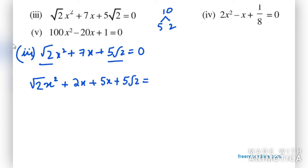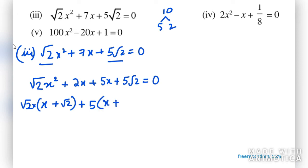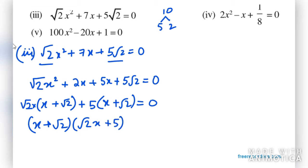So we write √2·x² + 2x + 5x + 5√2 = 0. From the first two terms, take x common: x(√2·x + 2). From the last two terms, take 5 common: 5(x + √2). This gives factors (x + √2) and (√2·x + 5). Equating to zero: x = -√2 and x = -5/√2.